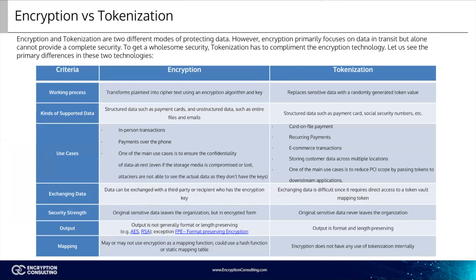With encryption, plain text is transformed into ciphertext using an encryption algorithm and key. With tokenization, however, sensitive data has a randomly generated token value. Data supported for encryption includes structured data such as payment cards, and unstructured data such as entire files and full emails. For tokenization, structured data would be payment cards, social security numbers, etc.